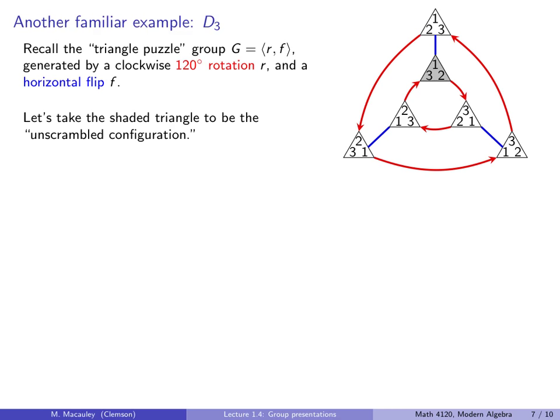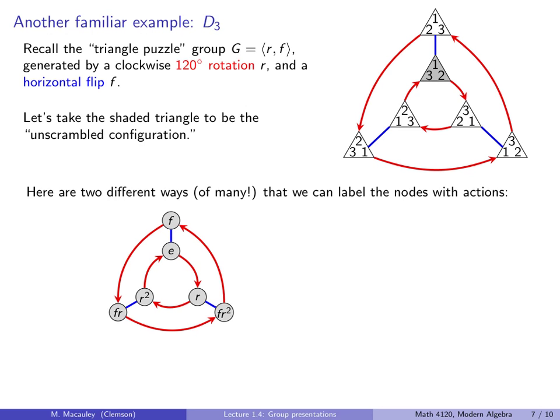Here's another example we've seen before, D3. This is the triangle puzzle group. And it's generated by 120 degree rotation R and a horizontal flip F. So let's take the shaded triangle up here to be the unscrambled configuration. Remember, it does not matter which one we use. So here are two different ways of many that we can label the nodes with actions. We're going to start and label this with the identity. We can call this one R. We can call this one R squared. We call this F. This one down here, we can say it's FR, and this one down here, we can say it's FR squared.